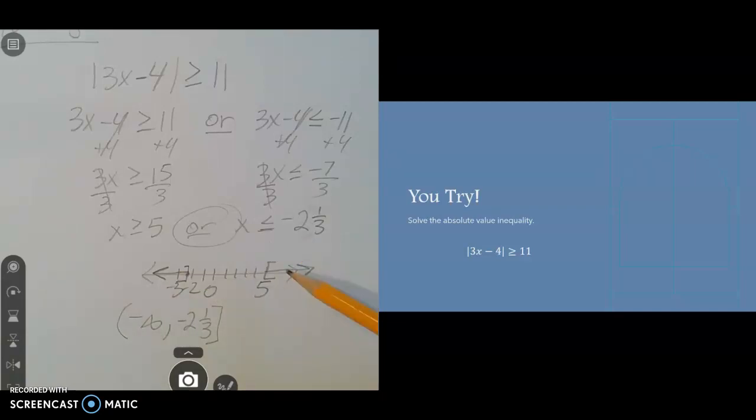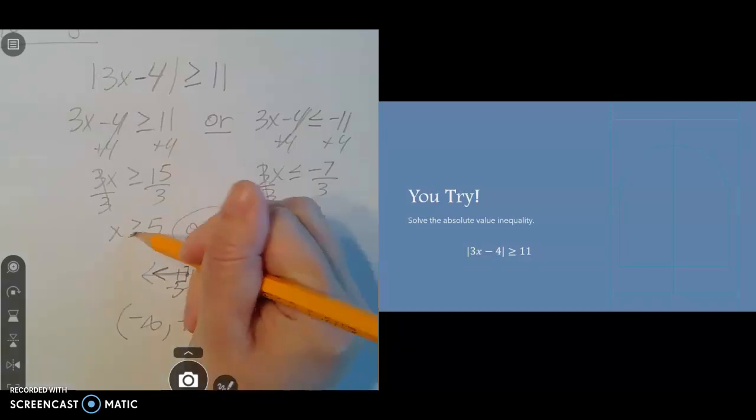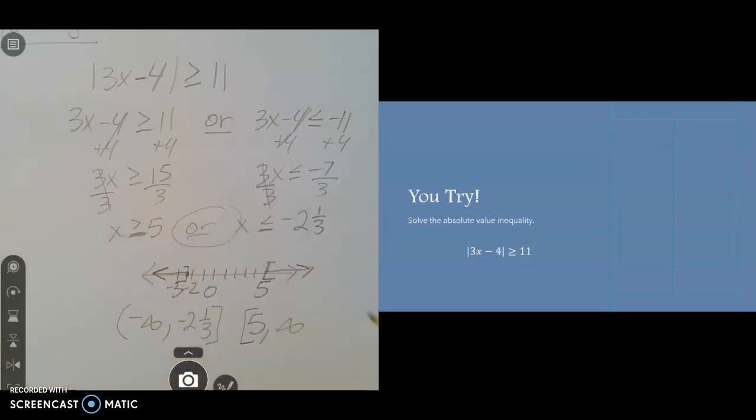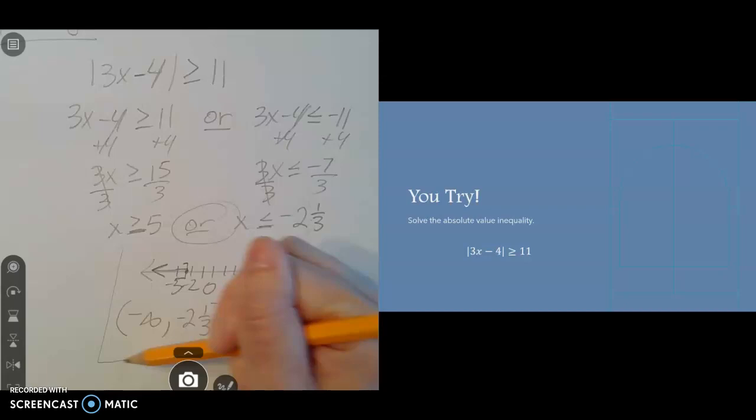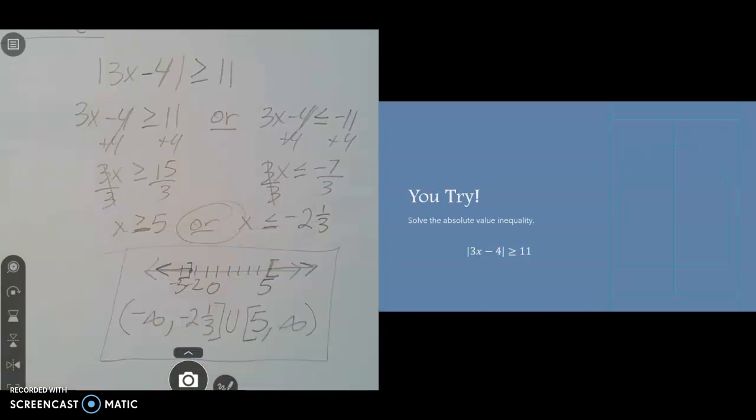Then our graph kind of picks back up again over here. How far left does this little piece go? It starts at 5. And how far right does it go? It keeps going forever in the positive direction, so that would be positive infinity. The 5 will have a bracket because of the or equal to part of our inequality there. Infinities always have a parenthesis. And then these two little pieces, we're going to join them together with the union symbol. So there's your graph, and there's your interval notation for this one.